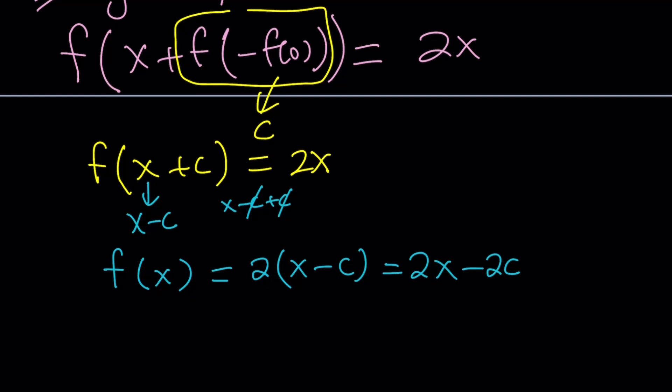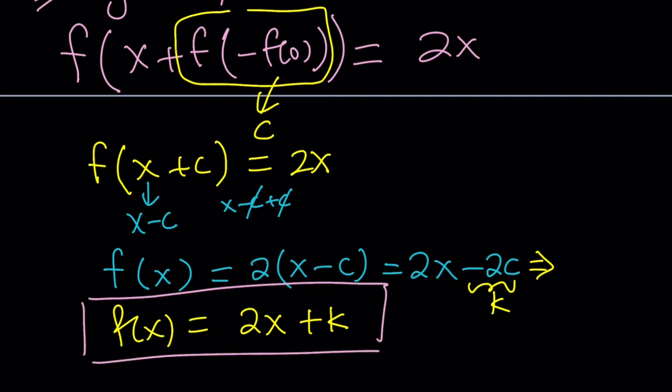And now, here's what we're going to do. 2c is a constant, negative 2c is a constant. So why not replace that with k? So, from here, f of x can be written as 2x plus a constant k. Great. Now, this is nice because at least I know what f looks like. It is linear. Guess what we can do with this information?